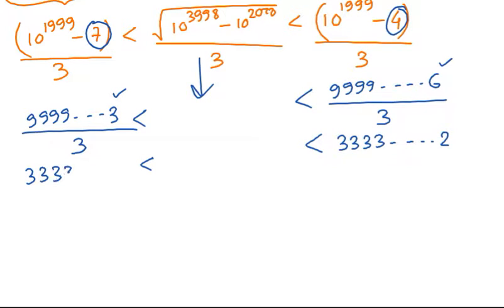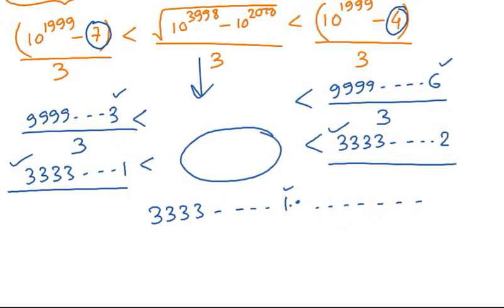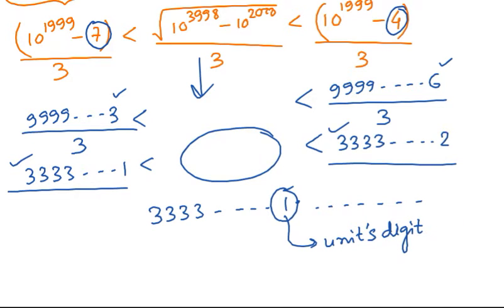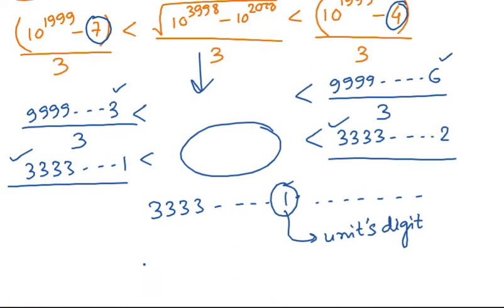The upper limit is 333...332 and the lower limit is 333...331. A number sandwiched between these two must be of the form 333...331.something. Since the units digit of this number is 1, and this units digit corresponds to the thousandth digit after the decimal of √N, our answer is 1.